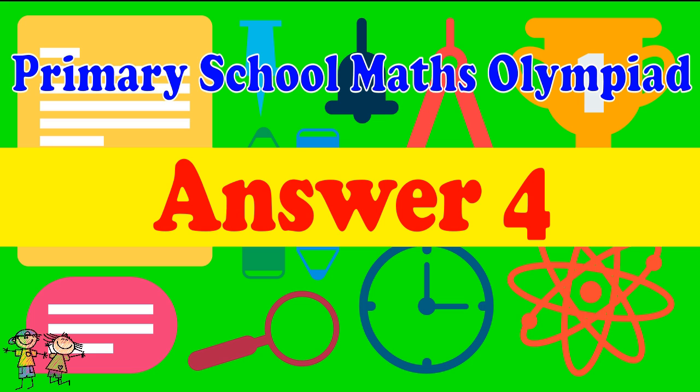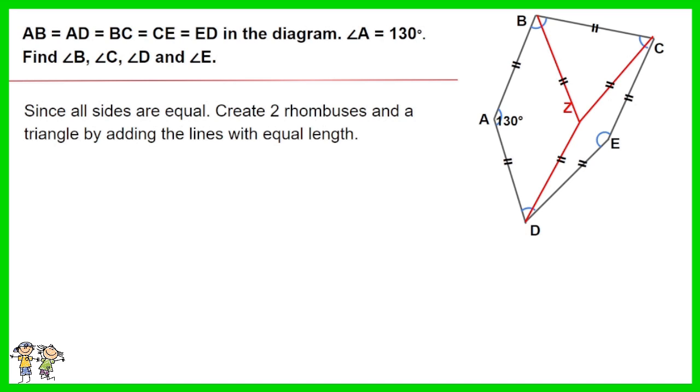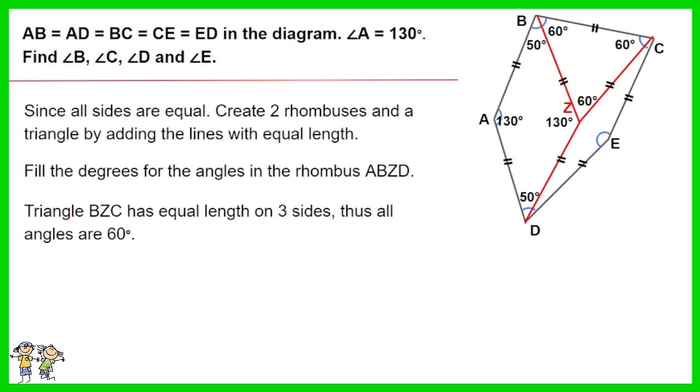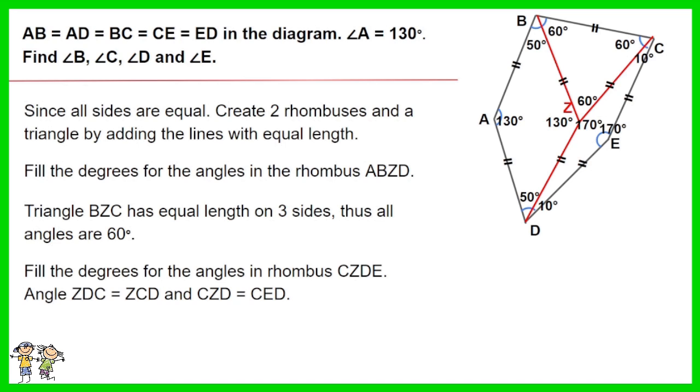Answer for question 4: Since all sides are equal, create two rhombuses and a triangle by adding the lines with equal length. Fill the degrees for the angles in the rhombus ABZD. Triangle BZC has equal length on three sides, thus all angles are 60 degrees. Fill the degrees for the angles in rhombus CZDE.